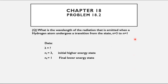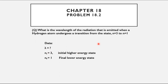Now let's look at Exercise problem 18.2 from Chapter 18 for further clarification. The question asks: what is the wavelength of the radiation emitted when a hydrogen atom undergoes a transition from the state n = 3 to n = 1? The final state is nf = 1 and the initial state is ni = 3. We need to find the wavelength of the emitted electromagnetic radiation and identify which series and region it belongs to.